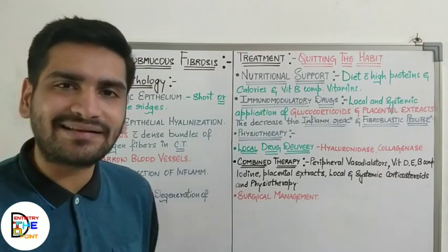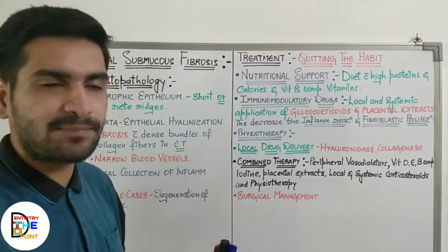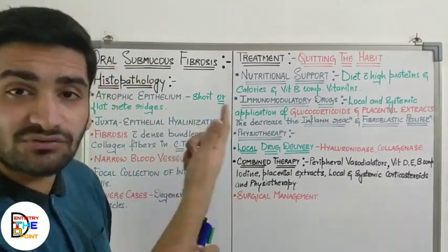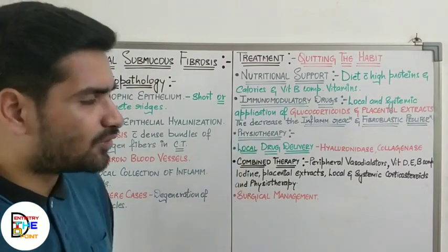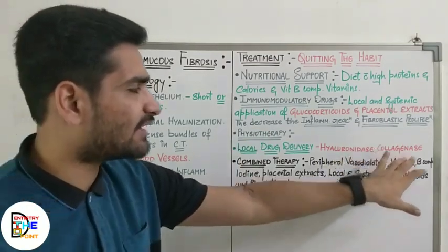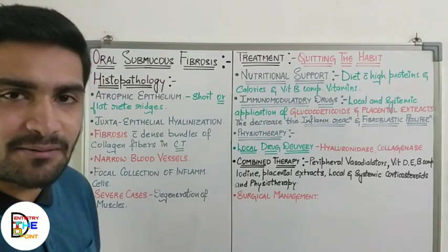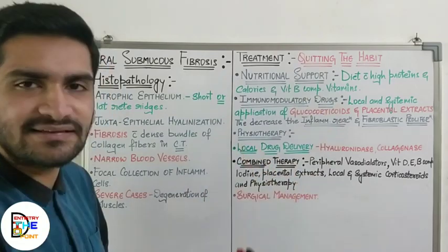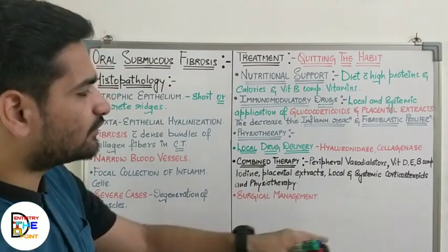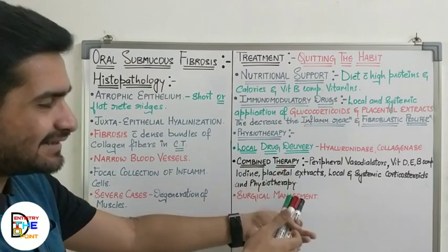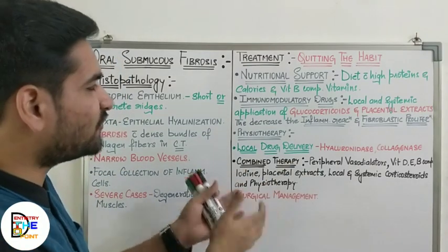Local drug delivery is another option — hyaluronidase and collagenase can be provided locally to reduce collagen fiber formation and fibrosis. Combined therapy can also be given based on severity, constituting peripheral vasodilators, vitamins, iodine, placental extracts, local or systemic corticosteroids, and physiotherapy — this combination is very effective.